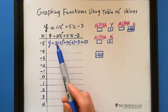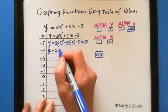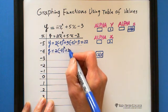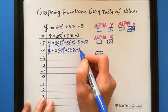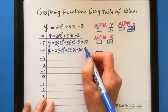you need to redo this one. You have y equals 2 times negative 4 squared plus 5 times negative 4 minus 3. Then you got the answer equals 9.